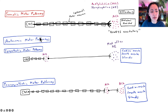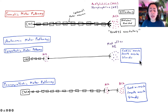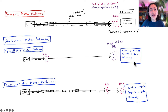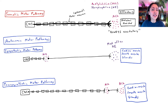The autonomic motor pathways can be thought of as your involuntary motor pathways because we do not have voluntary control of these target organs. The target is always going to be cardiac muscles, smooth muscles, or glands. Smooth muscles are found in your internal organs like your iris, stomach, intestines, blood vessels, and urinary bladder. Glands refer to any tissue that secretes a chemical, including endocrine glands, sweat glands, mucus glands, digestive glands, tear glands, and salivary glands.